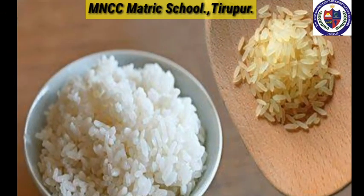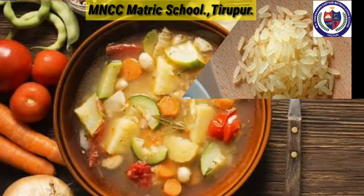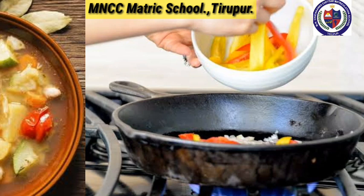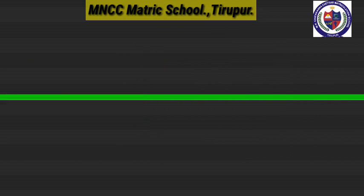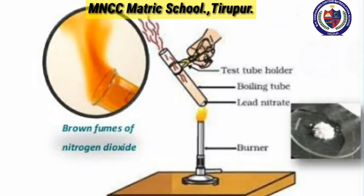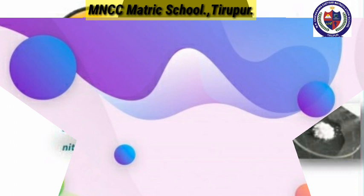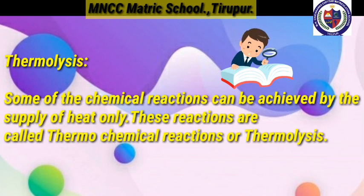Next we move to chemical reactions based on heat. Food is very important for our survival. Have you closely watched how your mother cooks food? She boils rice, cooks vegetables by heating them over a stove. When enough heat is given, some chemical reactions take place to convert raw, uncooked items into cooked items. For example, take a small amount of lead nitrate in a dry test tube and heat it gently over a flame. You will hear a cracking sound and see an evolution of reddish-brown colored gas — that is nitrogen dioxide. These reactions are called thermochemical reactions or thermolysis.